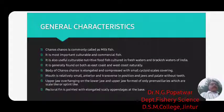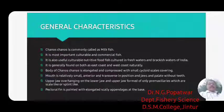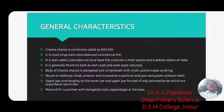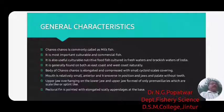In natural conditions, Chanos chanos is found on both the east coast — Bay of Bengal — and west coast — Arabian Sea — of India. The body of Chanos chanos is elongated and compressed, covered with small cycloid scales all over the body. The mouth is relatively small, anterior and transverse in position. Both jaws and palate are without teeth.